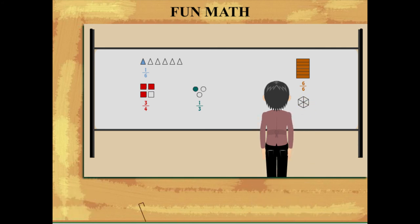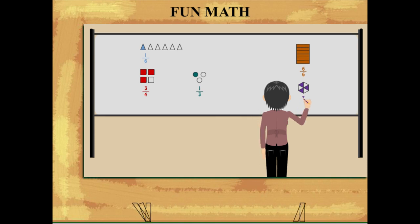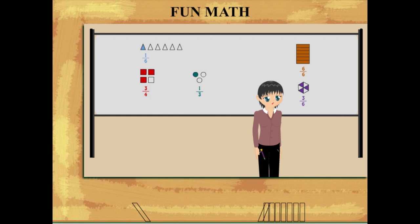She now draws a hexagon with six parts and shades three parts to make the fraction three upon six. Three out of six parts is half the parts. That was fun, Nancy ma'am!